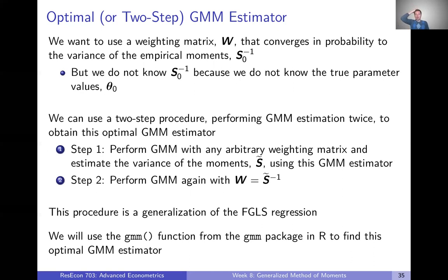We want to use the weighting matrix that converges in probability to the inverse of S₀. The problem is that S₀ is evaluated at the true parameter values, which we don't know — if we knew them, we wouldn't need to estimate. But we can use a two-step procedure, performing GMM twice: first with any arbitrary weighting matrix to obtain an estimate of S₀, then using that estimate as our weighting matrix in the second step to achieve the optimal GMM estimator.